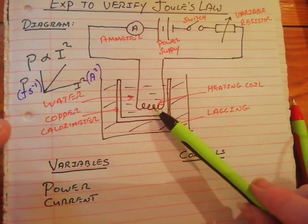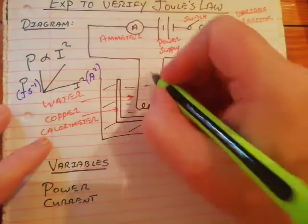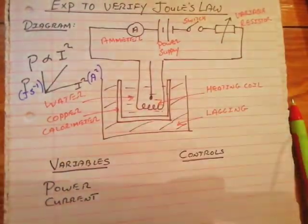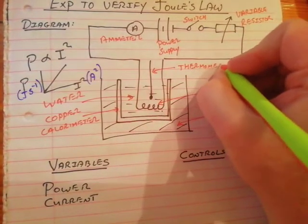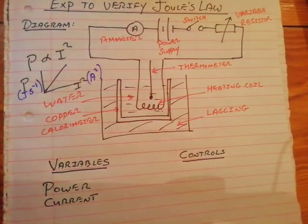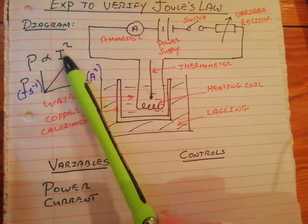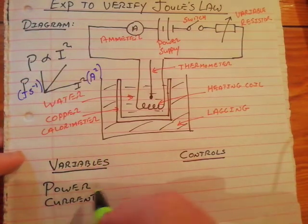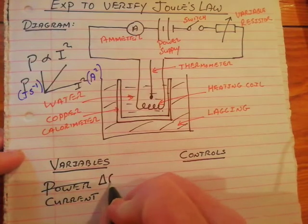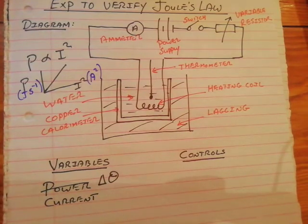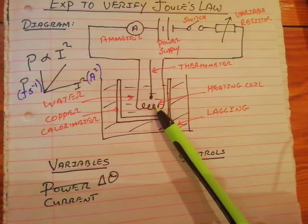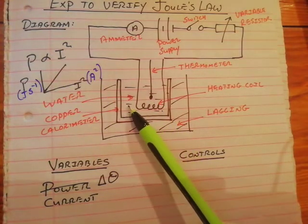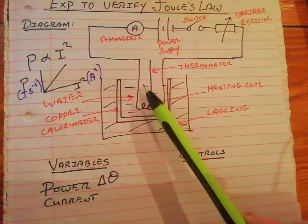In the Leaving Cert syllabus, it says don't actually measure power — instead, measure the rise in temperature that the current causes in the resistor. So we need another instrument: a thermometer. We'll prove that rise in temperature is proportional to current squared. However, rise in temperature also depends on the mass of water used and how long the current flows, not just the current itself.